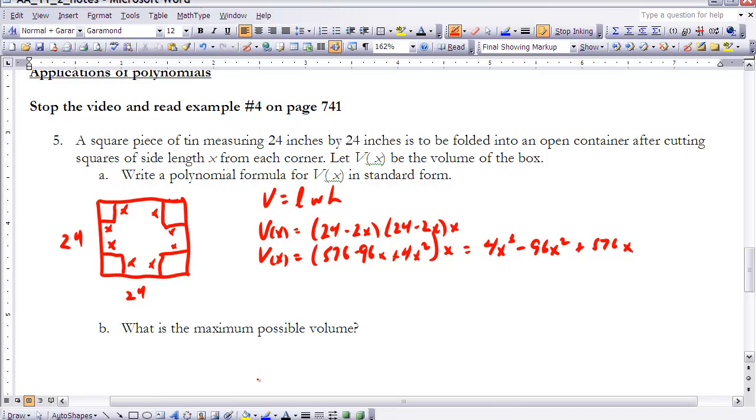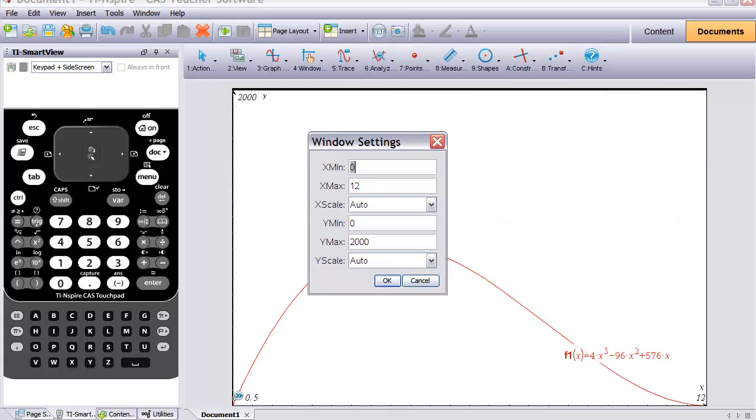Then part b says to find what is the maximum possible volume. To do that, what I'm going to do is I'm going to take my equation for the volume, or the function for the volume, and enter it in my graphing calculator and find where that maximum value is. Well, if you think about it, I want to think about the window I'd be looking at. So my x value has to be somewhere between 0 and 12, because if my side, each side length is 24, the most x value that I could cut out of each side would be 12.